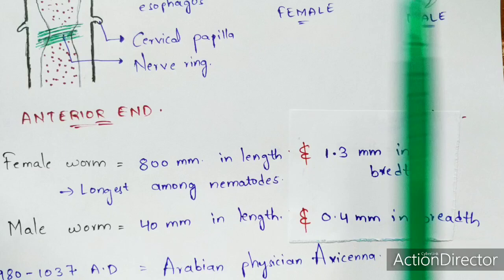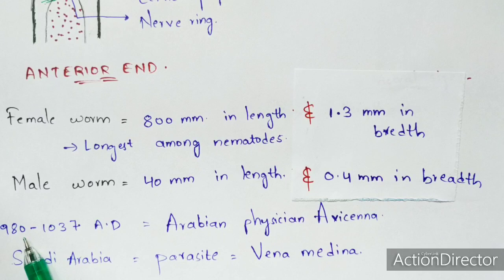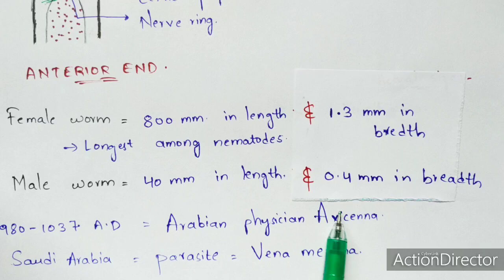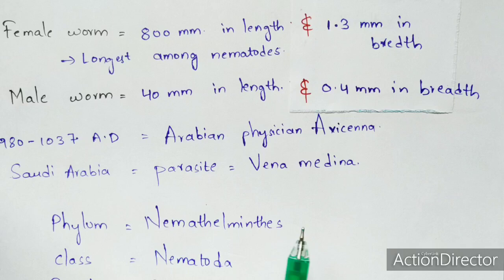The discovery of Dracunculiasis was made long ago. In 982 AD and 1037 AD, the Arabian physician Avicenna discovered this disease. In Saudi Arabia, the Guinea worm parasite is called Vena medina. The Guinea worm belongs to the phylum Nematelminthes, class Nematoda, and family Dracunculidae.